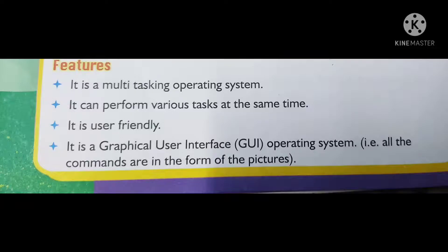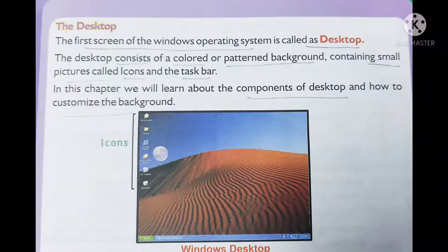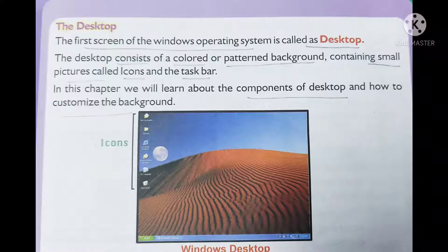The desktop is the first screen of the Windows operating system. It contains a color or pattern background and small pictures called icons, and also a taskbar. In this chapter we will learn about the components of the desktop and how to customize the background — that means how to change the background ourselves.